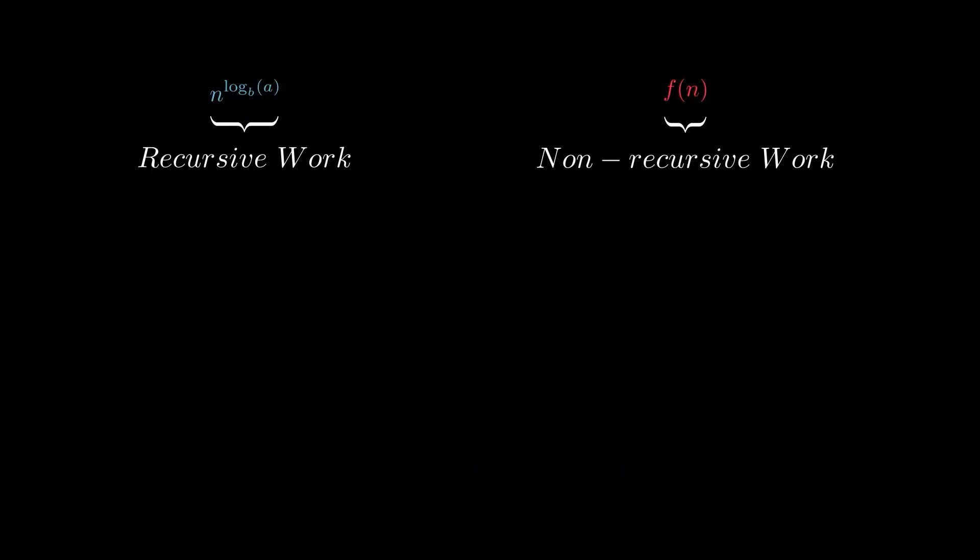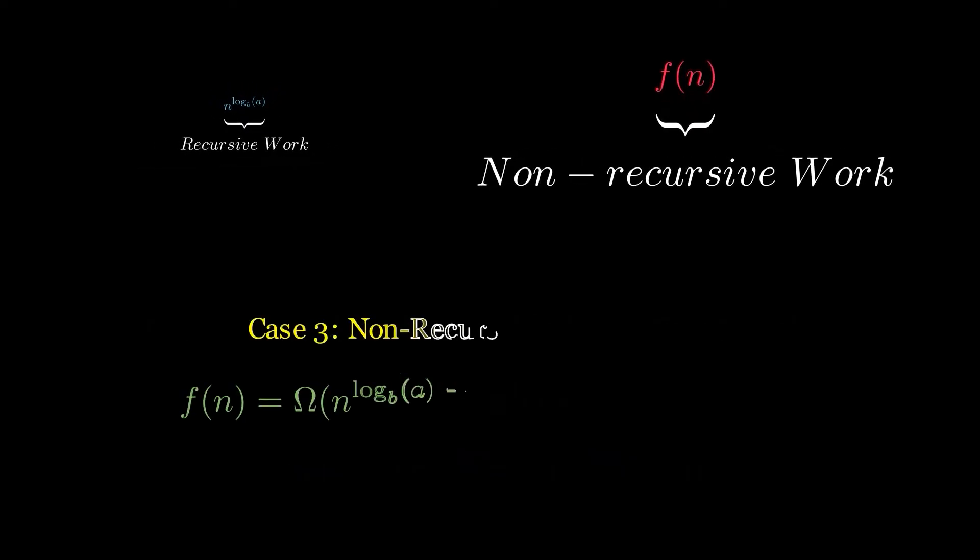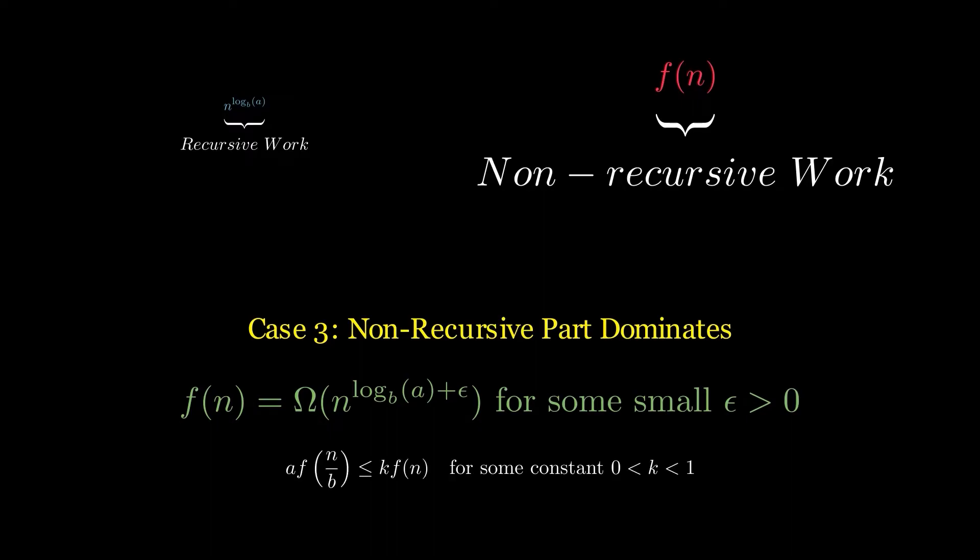In the third case, the analysis focuses on scenarios where the non-recursive part of an algorithm grows at least polynomially faster than the recursive part. The critical aspect here is the verification of a regularity condition, which is essential to confirm that indeed the function dominates the overall complexity. If this regularity condition is satisfied, the total time complexity is determined to be Θ(f(n)), which signifies that the non-recursive part governs the algorithm's performance.